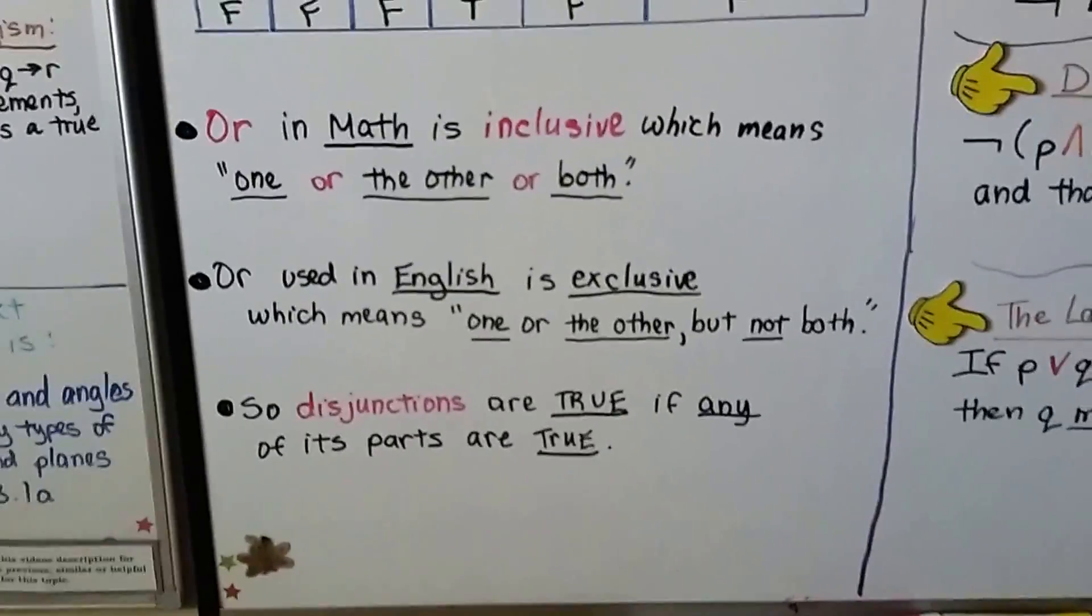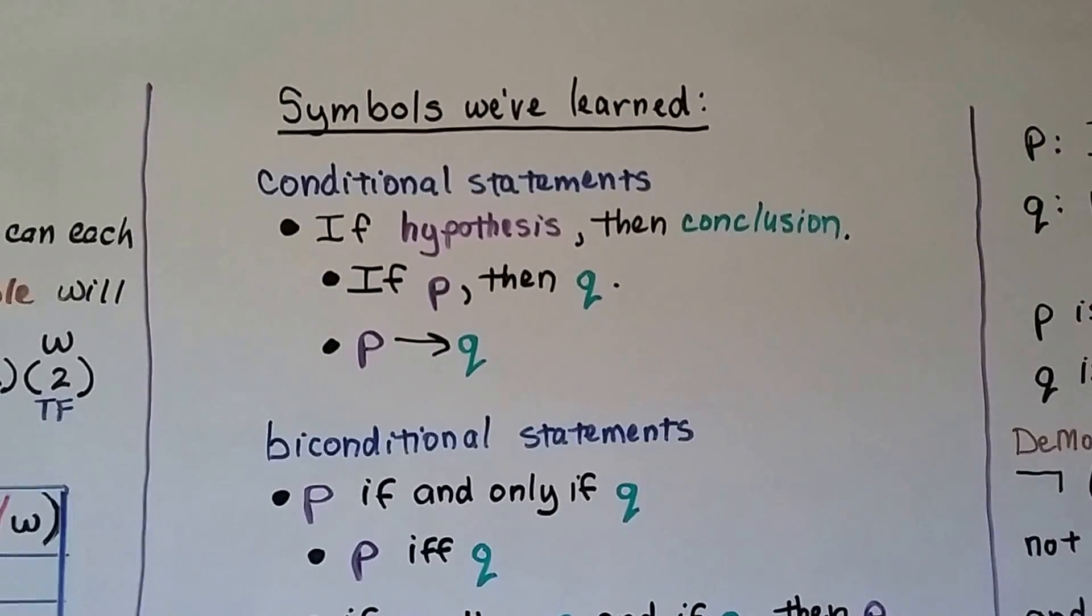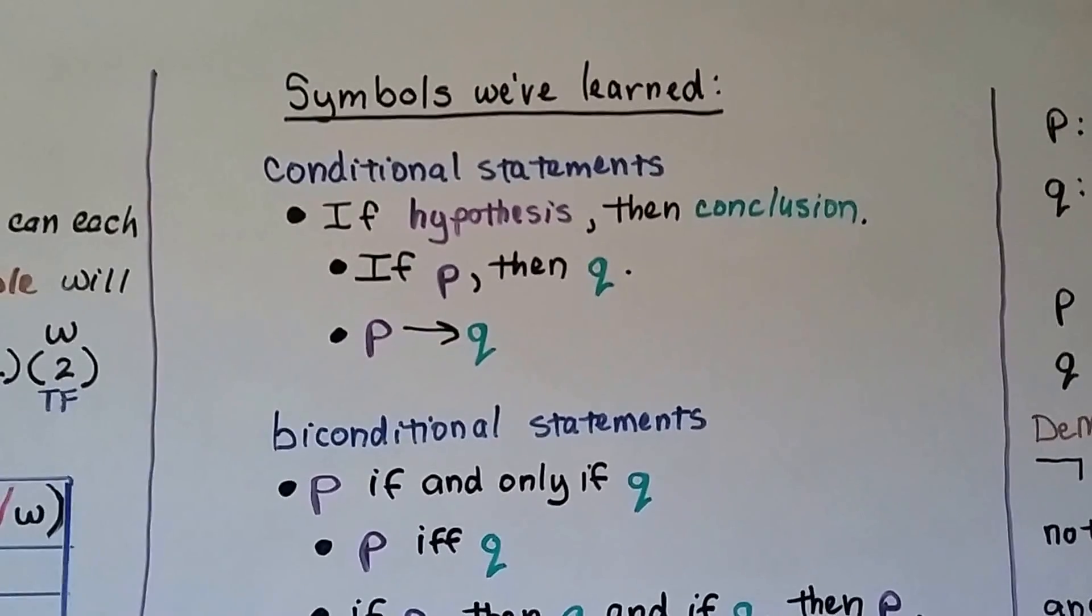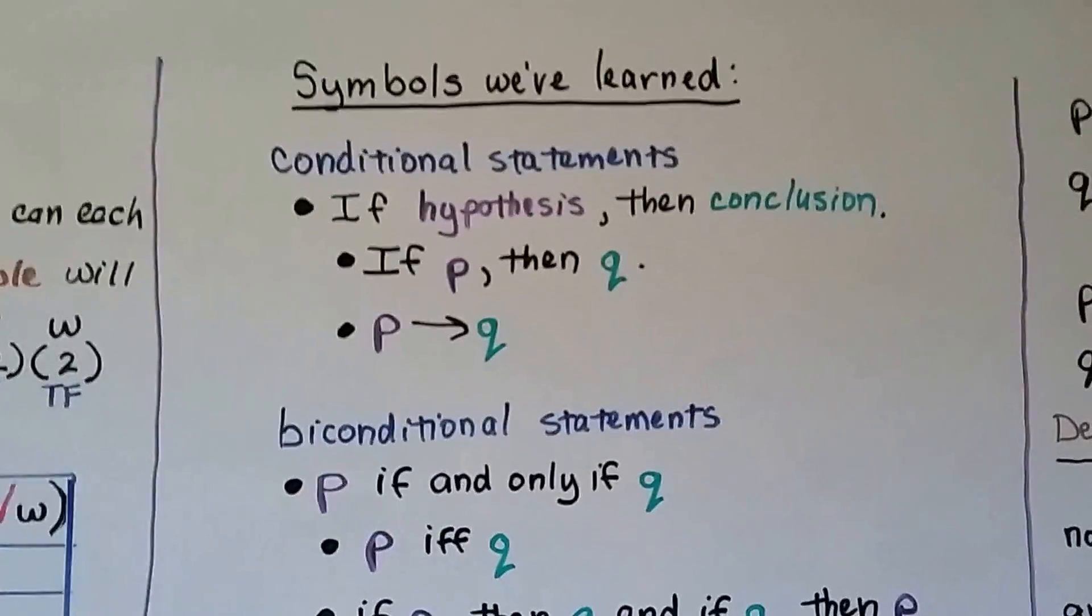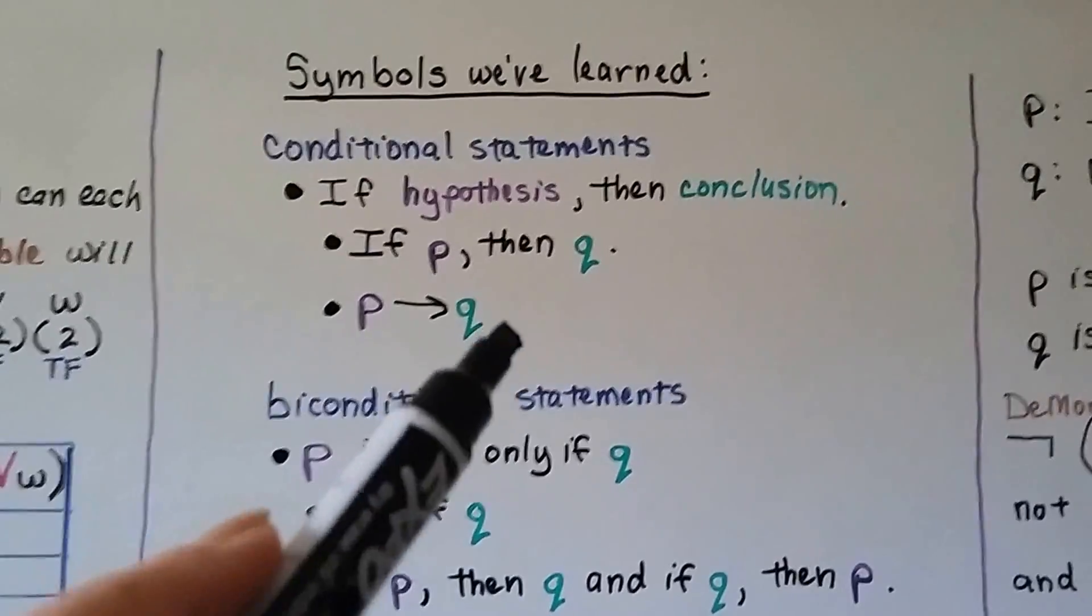Here are some symbols we've learned. These are for the conditional statements. If we have a hypothesis, then conclusion would be if P, then Q. And we could write it with our arrow pointing to the side saying P, therefore Q.